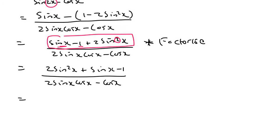Now if you had to factorize the top, it's a trinomial. And so that's going to give us 2 sinx minus one, and sinx plus one. At the bottom, you could take out a common factor of cosx, and then you'd be left with 2 sinx minus one. And those are going to then cancel.